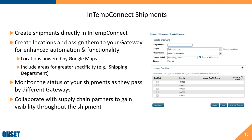Shipments allow you to monitor shipment status, though this is not a real-time system — it's not like cellular GPS loggers. Data can only be seen as loggers pass affiliated gateways in your Intemp Connect account. As they pass those gateways, the system automatically updates shipment status. This feature allows collaboration with supply chain partners to gain visibility throughout the entire supply chain.